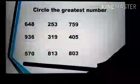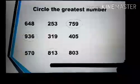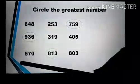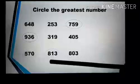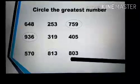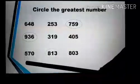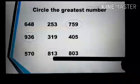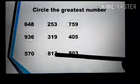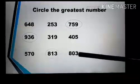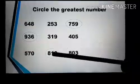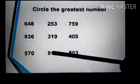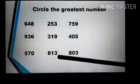Then we have 570, 813, and 803. Compare the first digit of each number: 5, 8, and 8. 5 is less than 8, so we compare 813 and 803. Their first digits are the same, so we compare the second digit: 1 and 0. 1 is bigger than 0, so we can say 813 is the greatest number.